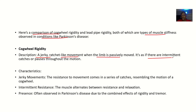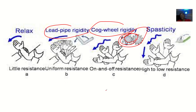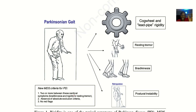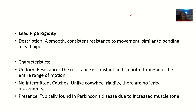In cogwheel rigidity, there are intermittent catches throughout the motion. The characteristics are jerky movement — the resistance comes in a series of catches resembling the motion of a cogwheel. The muscle alternates between resistance and relaxation: cogwheel is on and off. It is observed in Parkinson's disease due to the combined effect of rigidity and tremor — as you are being rigid, you are also tremoring.